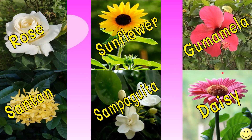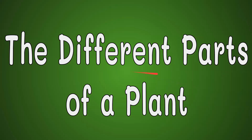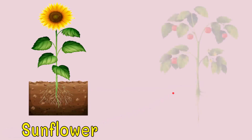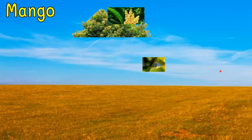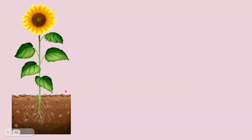Great job with that, kids. Let's go right away to the different parts of a plant. Let's begin with this one. What do you call this plant? Correct, it's a sunflower. This one? Tomato. How about this? Yes, it's mango. Now let's go to this one first.